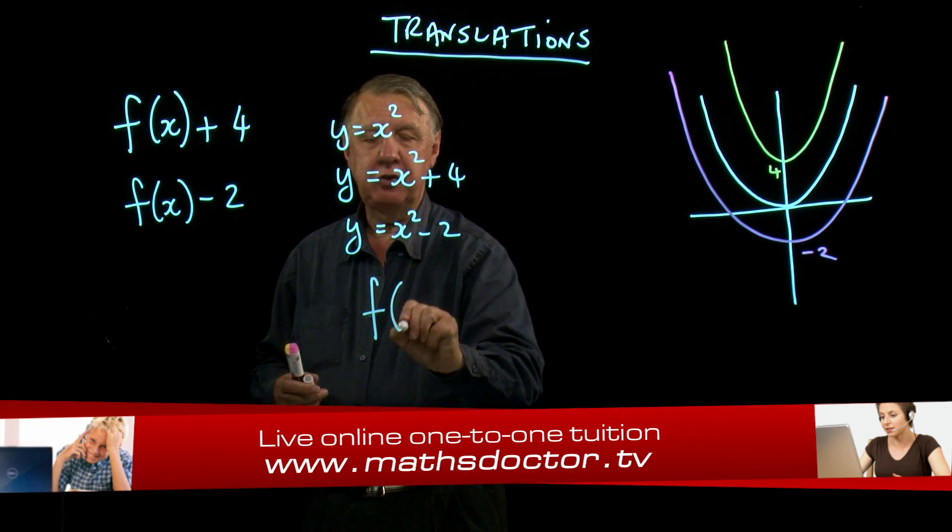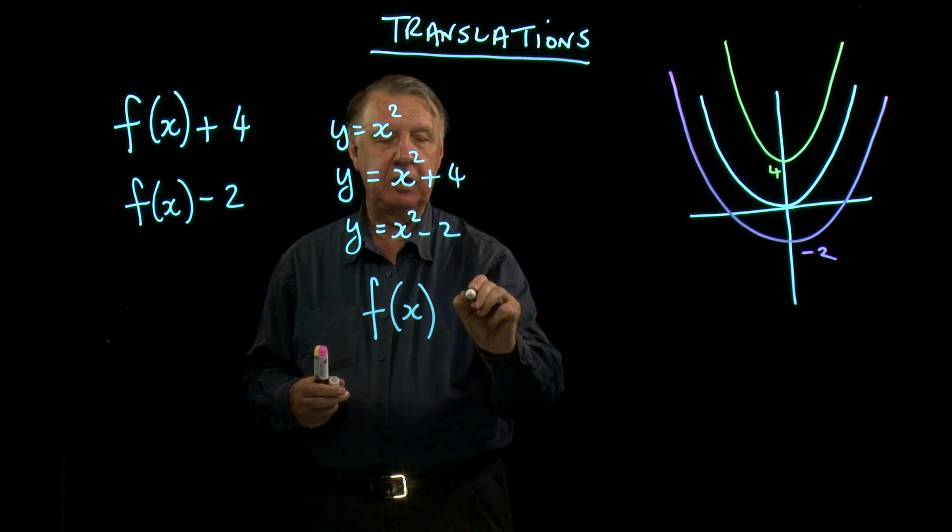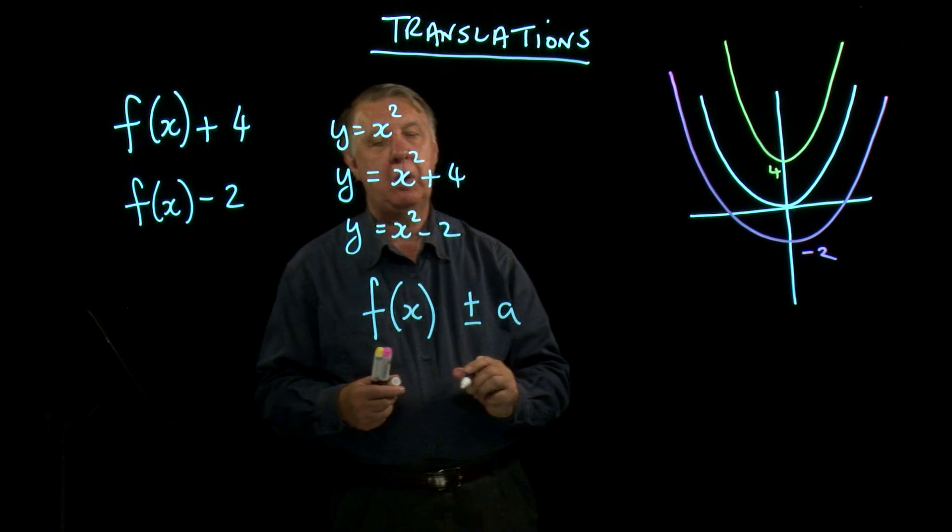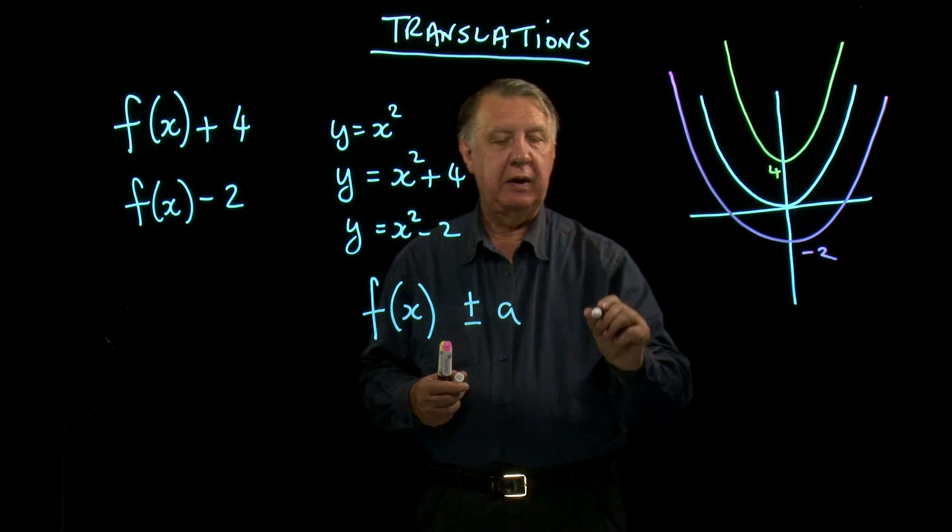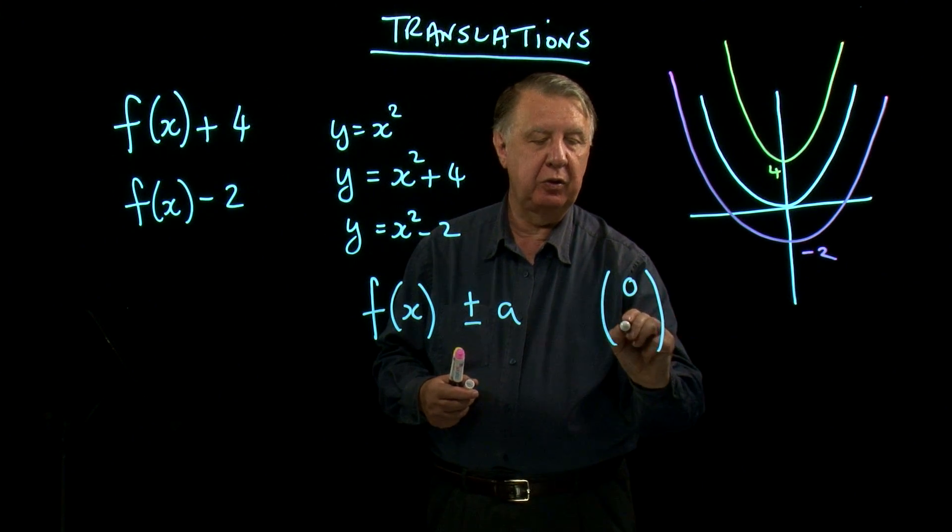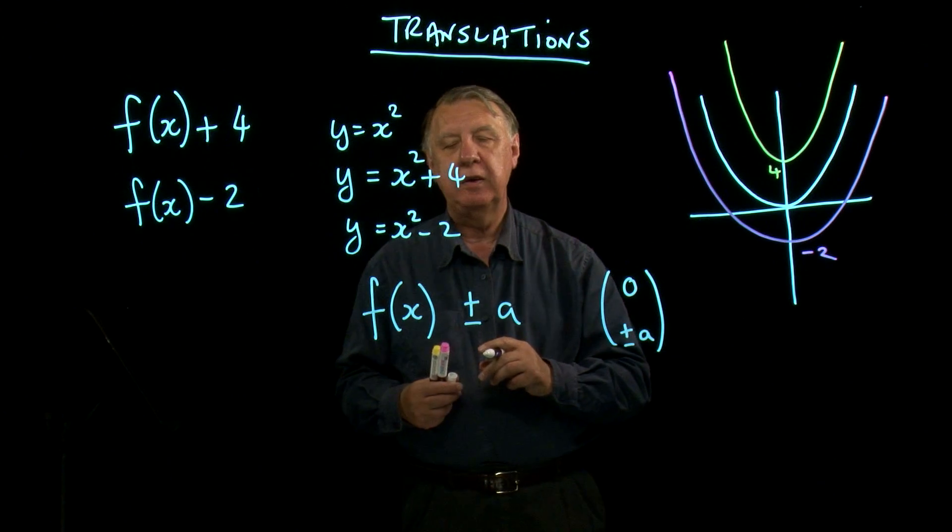So if we want rules for this, then function x, let's try and do it in one line this time, plus or minus a will be a translation of 0 plus or minus a using our vectors.